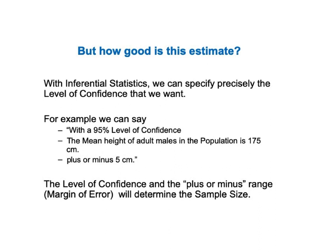We can specify that we want a 95% level of confidence. Depending on sample size and the amount of variation of the measurements in the sample, we could come up with a result that says: with a 95% level of confidence, the mean height of adult males in the population is 175 centimeters plus or minus 5 centimeters. That plus or minus 5 centimeters is the margin of error — it tells us this is an interval estimate. The level of confidence and the margin of error will help determine the sample size.